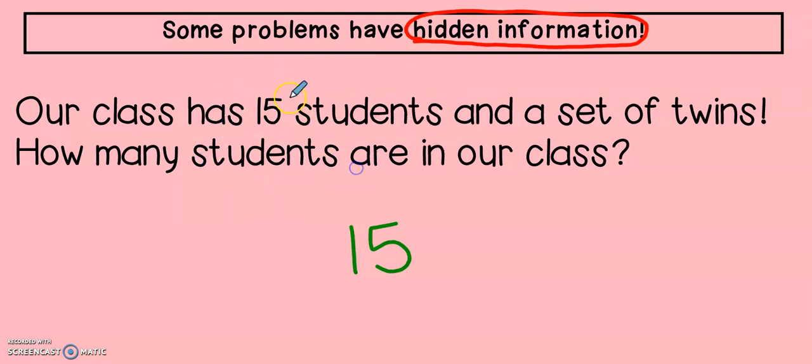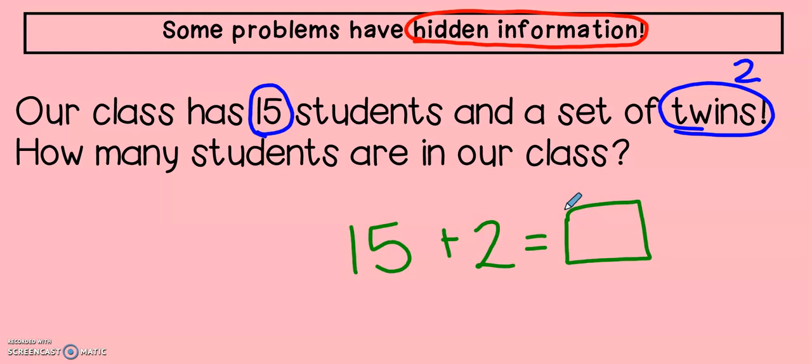Did you spot the hidden information that I spotted? There are fifteen students, but it also says there is a set of twins. How many students would be in a set of twins, second grade? Do you know how many are in twins? Twins are two students. So not only do I have fifteen, I also have my set of twins, and now I can find my total number. Fifteen, sixteen, seventeen. That means that my class has seventeen students, not just fifteen like they tried to trick us with. They hid the part about the twins. That is our hidden information.